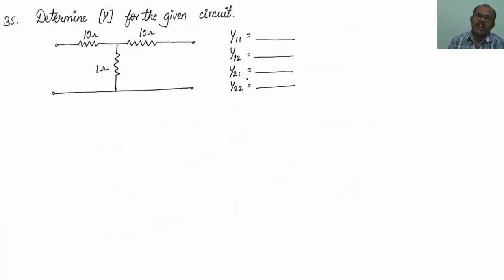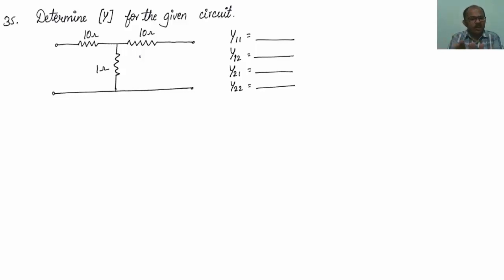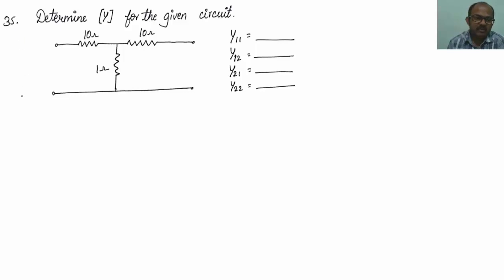35th question: we have to write the Y parameters for the given circuit. I will first calculate Z parameters, then derive Y parameters from them. For the Z parameters: Z11 equals 11, Z12 equals 1, Z21 equals 1, and Z22 equals 11.